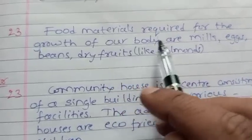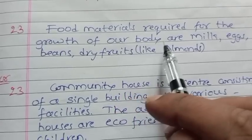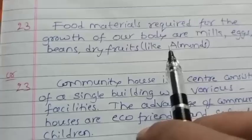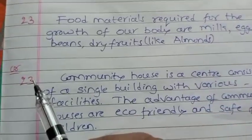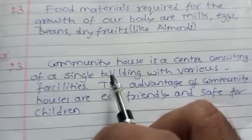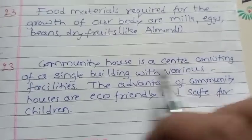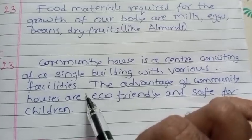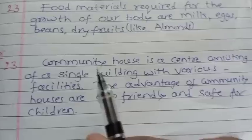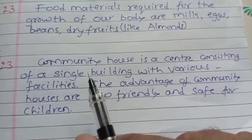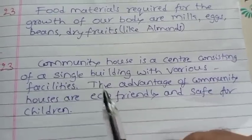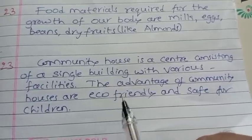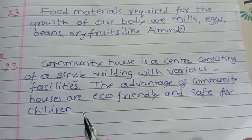Food materials required for the growth of our body are milk, eggs, beans, and dry fruits like almonds, etc. A community house is a center consisting of a single building with various facilities, and the advantage of community houses is that they are eco-friendly and safe for children.